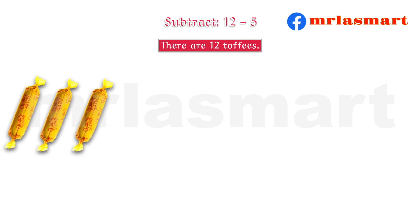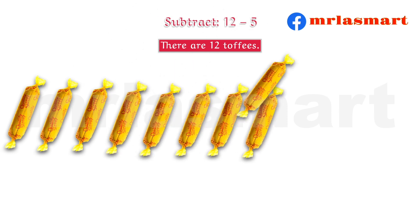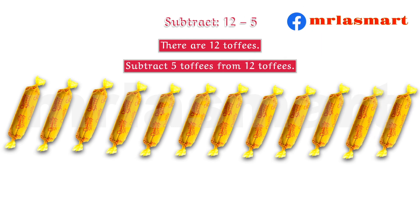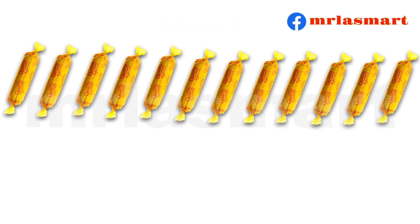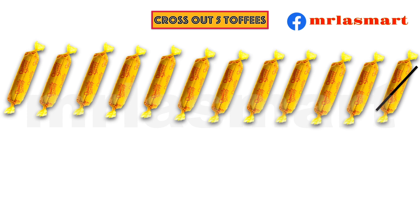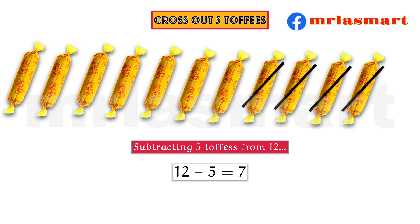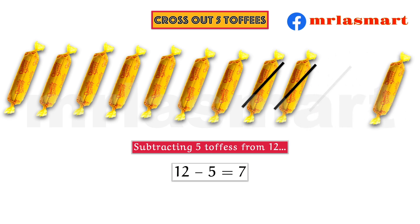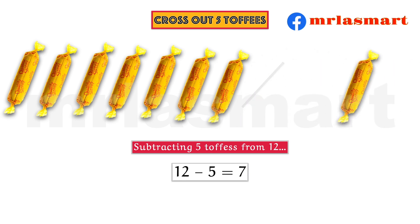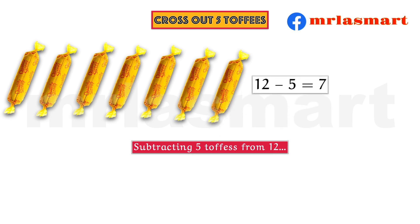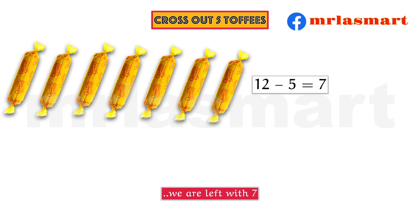There are 12 toffees. Subtract 5 toffees from 12 toffees. Cross out 5 toffees. Subtracting 5 toffees from 12: 12 minus 5 equals 7. We are left with 7.